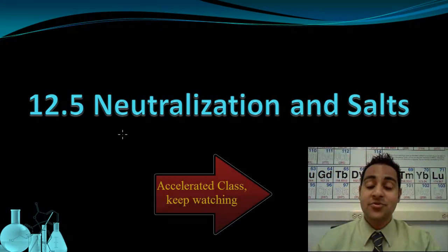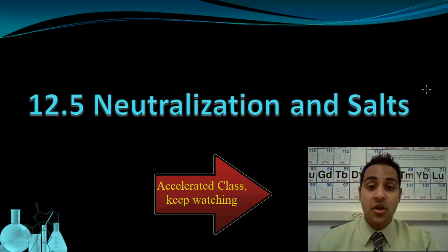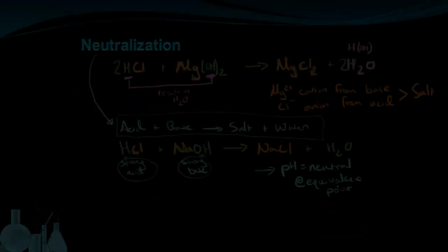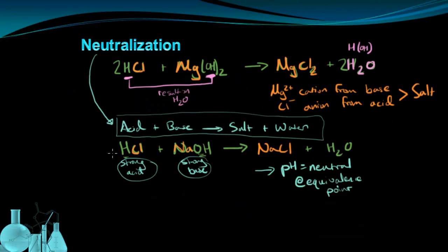That wraps up our lesson on neutralization of acids and bases. We're now going to take a closer look at the role of salts — how they're made and what their effect is on the pH of the solution after neutralization has occurred. We just looked at the HCl plus NaOH reaction. What we're going to answer now is why the pH is neutral when we have a neutralization reaction between a strong acid and a strong base, and it has something to do with the salt. The NaCl is going to be the important factor here.